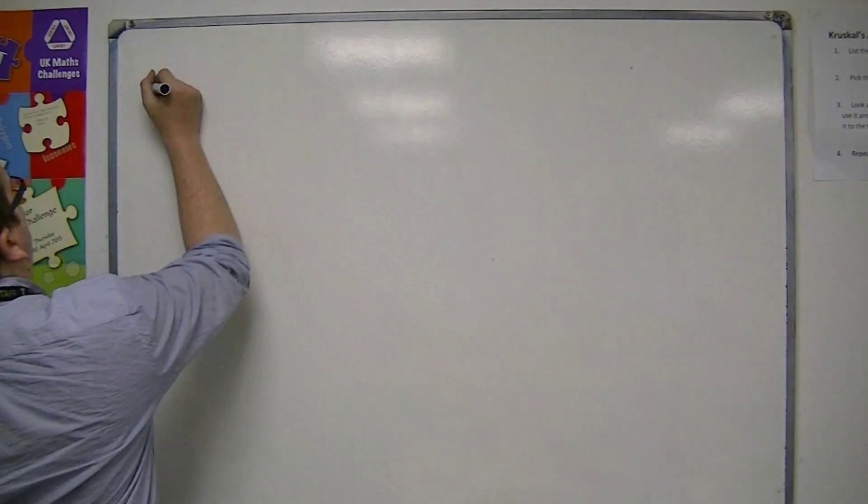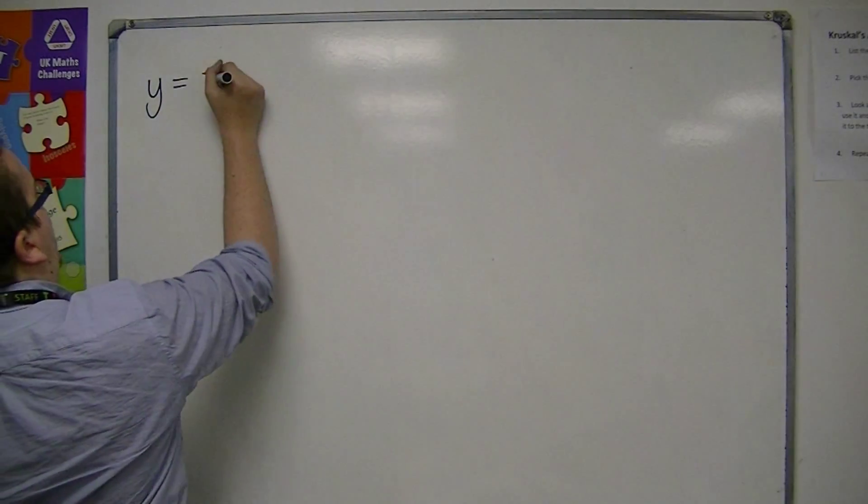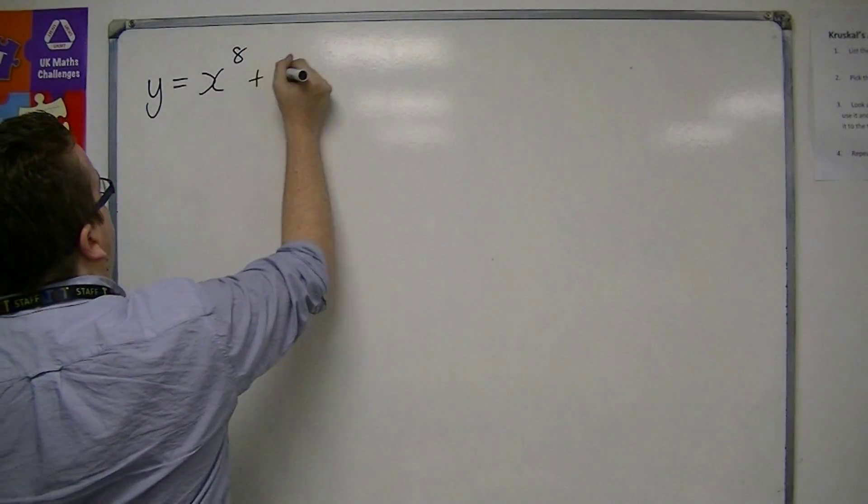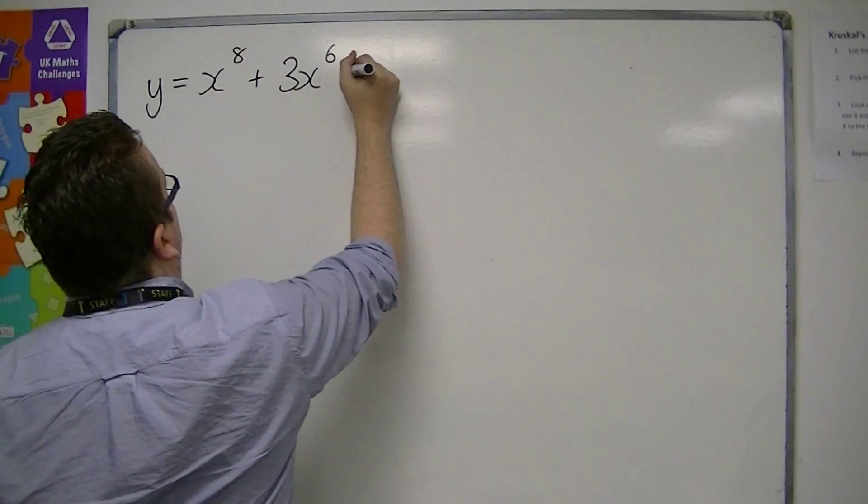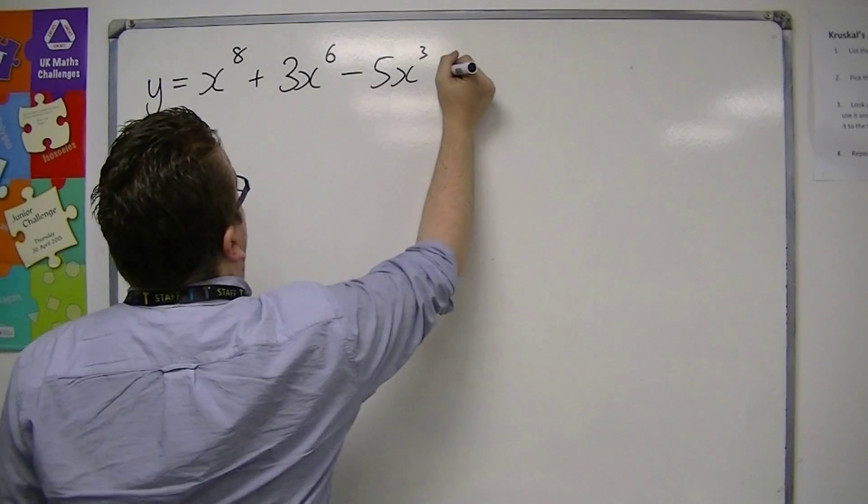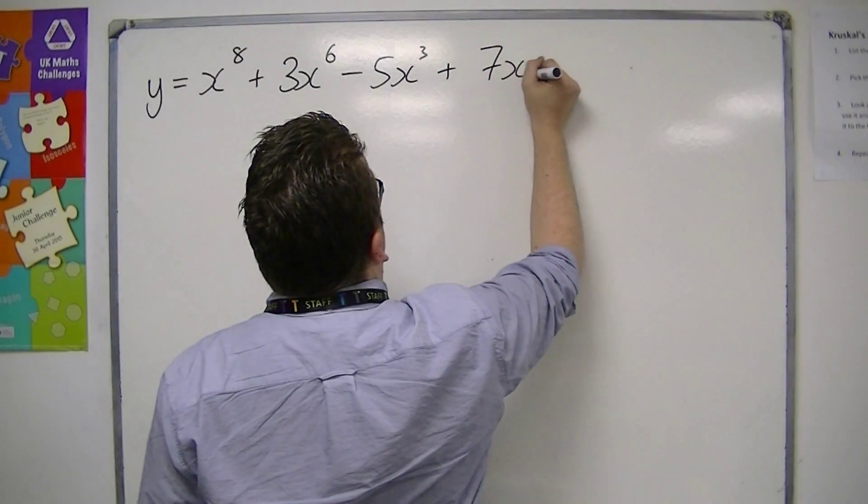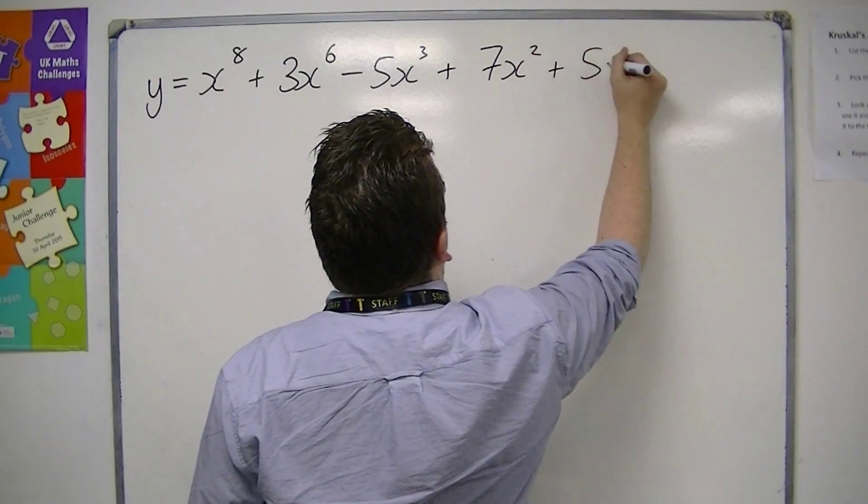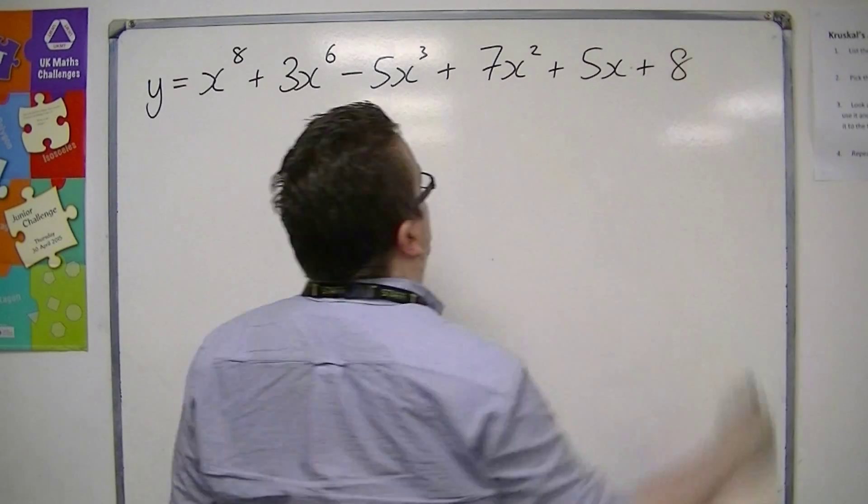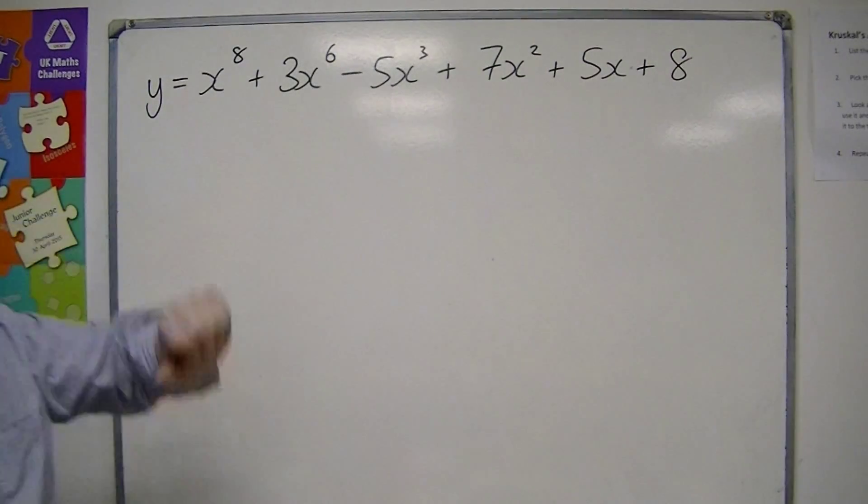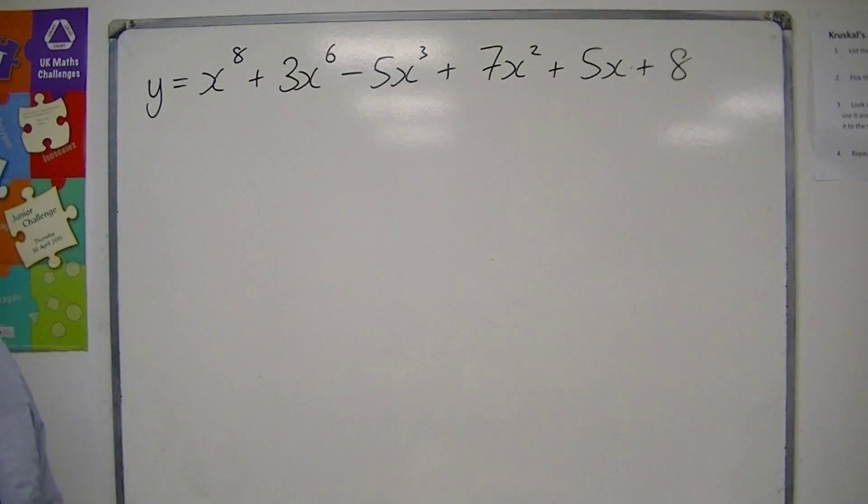So let's start off with something absolutely horrible looking. Okay? So here is an absolutely horrible looking polynomial, and I want to differentiate it.